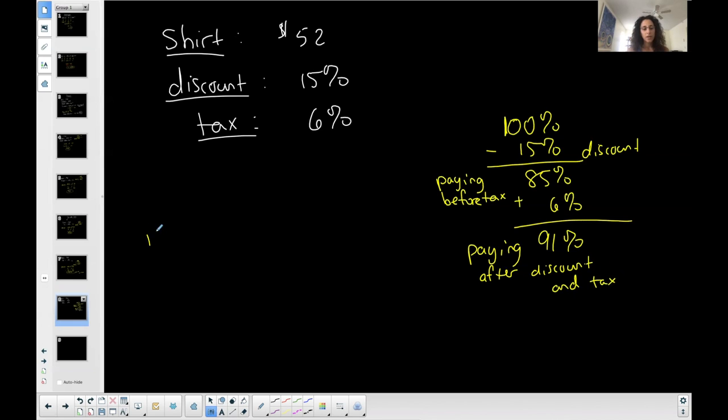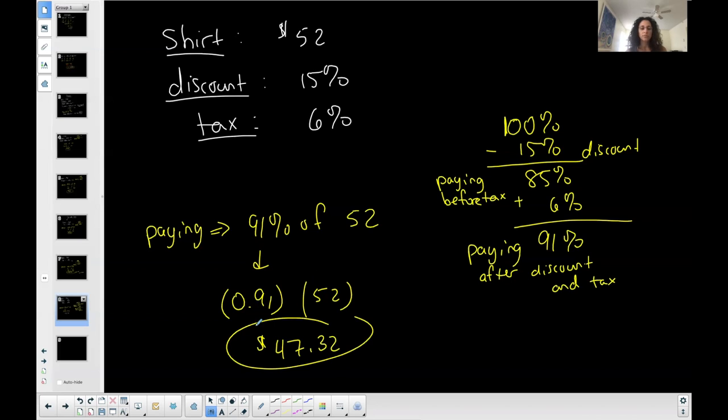So when I go to the register, I know that I'm paying 91% of the original $52. 91% converted into a decimal is 0.91 of implies multiplication and 52 is 52. What is 0.91 times 52 is 47.32. I am paying $47.32 for this shirt that originally cost $52 and was discounted 15% with 6% tax. I can go to the register and say, I know that I'm paying $47.32. So let's say I have $50 in my pocket. I could afford that. I already know.